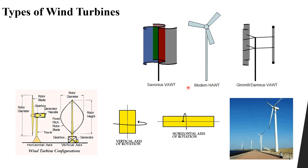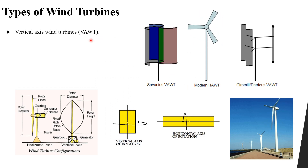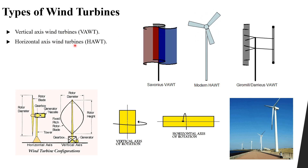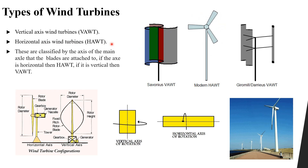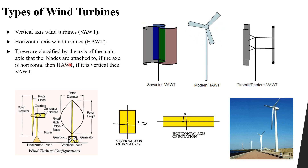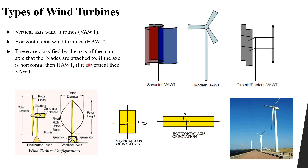The first thing is that we have two main types of wind turbines. We have the vertical axis wind turbines, denoted by VAWT, and the second type is the horizontal axis wind turbines. These are classified by the axis of the main axle that the blades are attached to. If the axis is horizontal, it will be named a horizontal axis wind turbine; if the axle is vertical, it will be a vertical axis wind turbine.